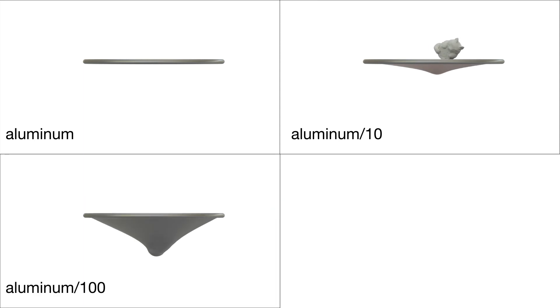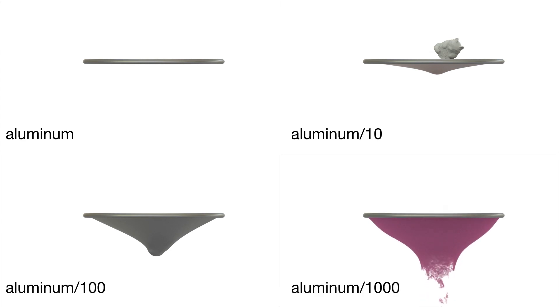Here, HOT simulates smashing a stiff lucky cat onto sheets with accurately varying stiffness starting from aluminum and then progressively scaling Young's modulus down by factors of 10, 100, and 1000. Here, different materials give drastically different elastoplastic behaviors.